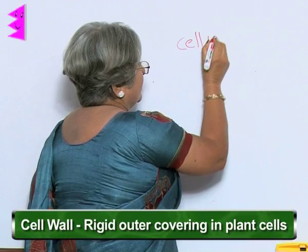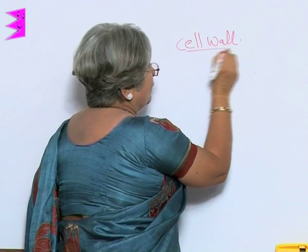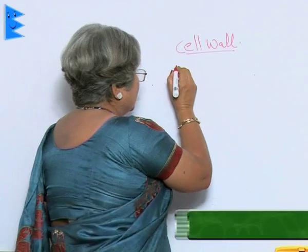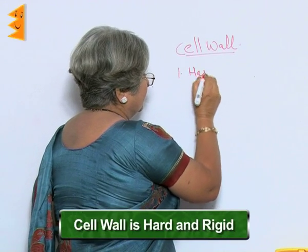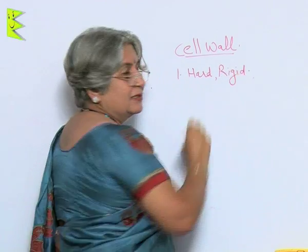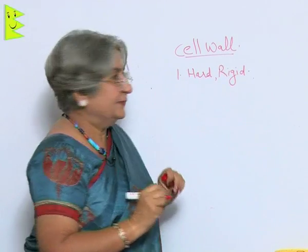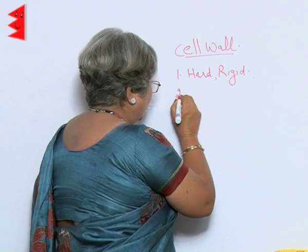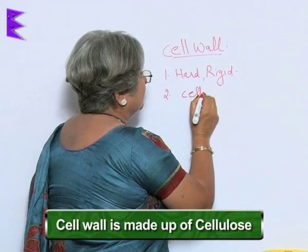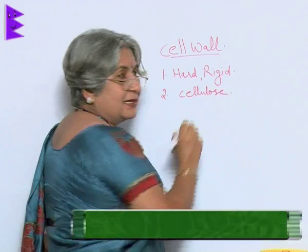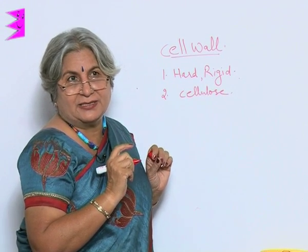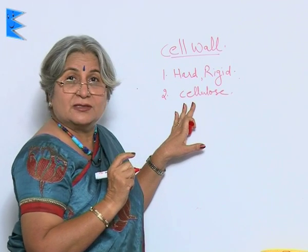The cell wall is quite different from the cell membrane. First of all, it is hard and rigid while the cell membrane was soft and flexible. Secondly, the cell wall is made up of cellulose as compared to the cell membrane which was made up of protein and lipids.